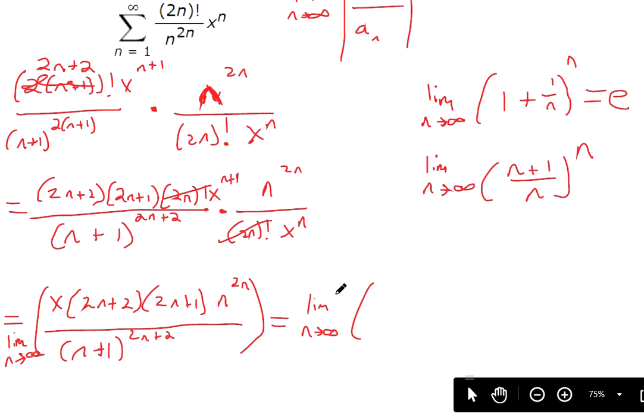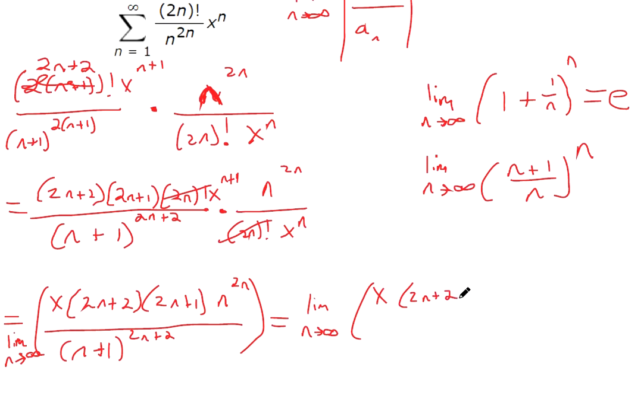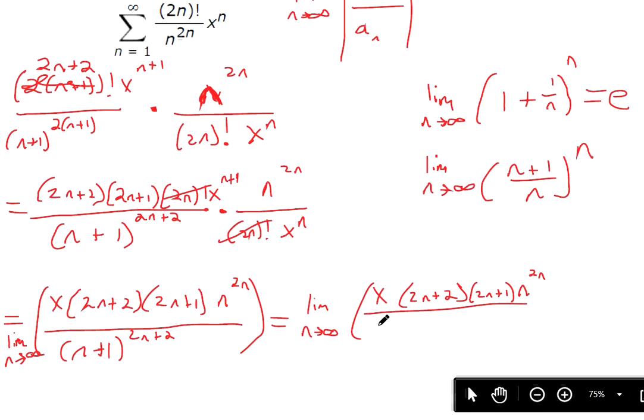Now this is x times 2n+2 times 2n+1 times n to the 2n over... Now down here, this is the same as (n+1) squared times (n+1) to the 2n power. So check to see where I got that from. This is still the same, because if you multiply two numbers of the same base, the powers add. So that would be 2+2n, which is the same thing that we have over here.